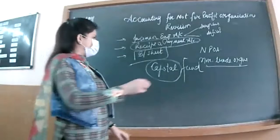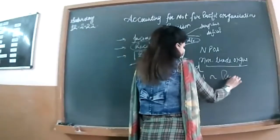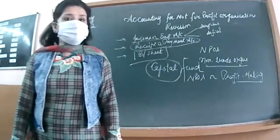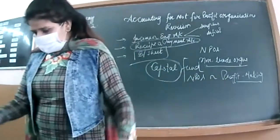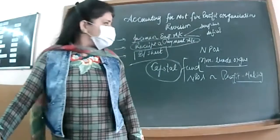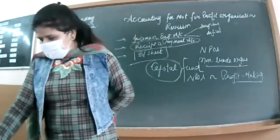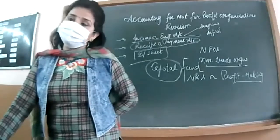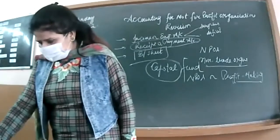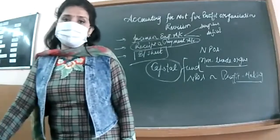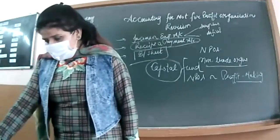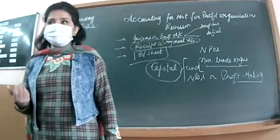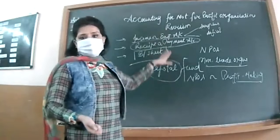Now he is talking about the difference between NPOs and profit-making organizations. The NPO's purpose is to promote culture, education, sports, and extracurricular activities. In contrast, a profit-making organization's purpose is to earn profit. Sources of funds: profit-making organizations raise capital from proprietors, partners, shareholders as share capital, or borrow through debentures. NPOs' sources of funds include entrance fees, life membership fees, subscriptions, and loans from banks and financial institutions. Financial statements: sole proprietors prepare Trading and P&L Account; partnerships prepare P&L Appropriation Account; companies prepare a Statement of P&L — all with a balance sheet.